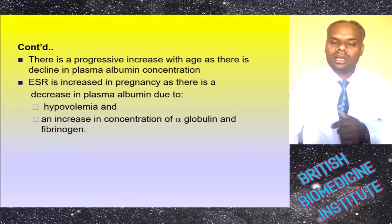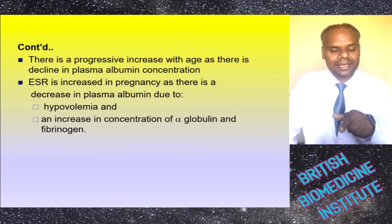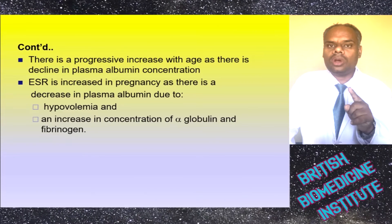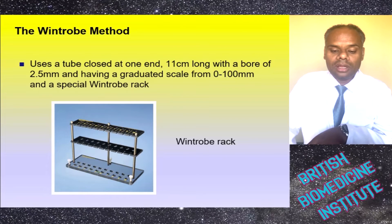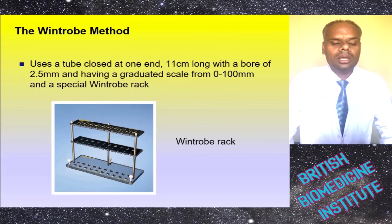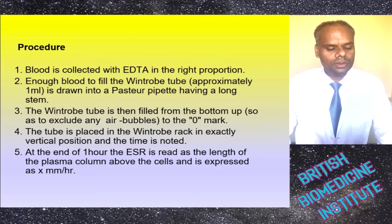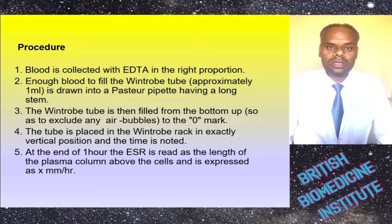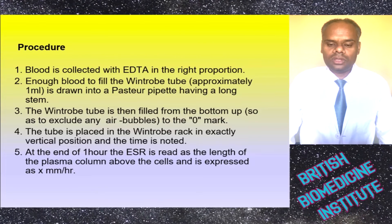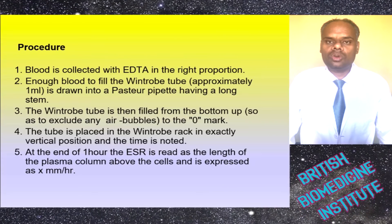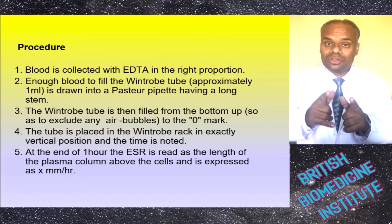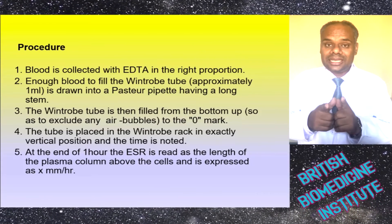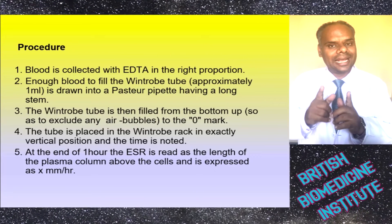The second method is the Wintrobe method. It uses a tube closed at one end, 11 cm long with a bore of 2.5 mm, graduated from 0 to 100 mm, and a special Wintrobe rack is available. Blood is collected with EDTA in the correct proportion. Enough blood to fill the Wintrobe tube is drawn into a Pasteur pipette with a long stem. The Wintrobe tube is filled from the bottom up to exclude air bubbles to the zero mark, placed vertically in the Wintrobe rack, and the time is noted. After one hour, the ESR is read as the length of the plasma column above the cells and expressed in X mm per hour.